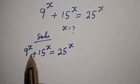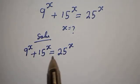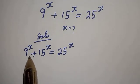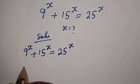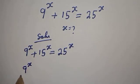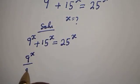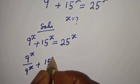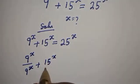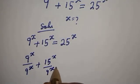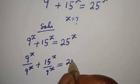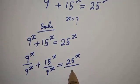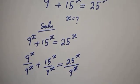Now from here, we have 9 raised to power s, 15 and 25. Let's divide all through by 9 raised to power s. So we get: 9^s divided by 9^s, plus 15^s divided by 9^s, is equal to 25^s divided by 9^s.